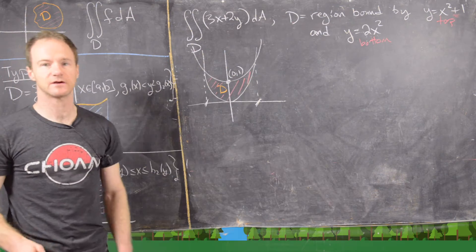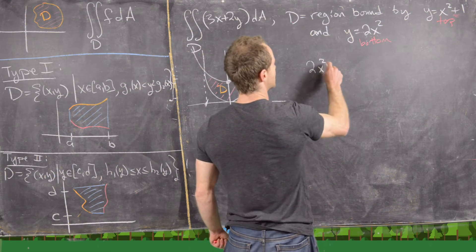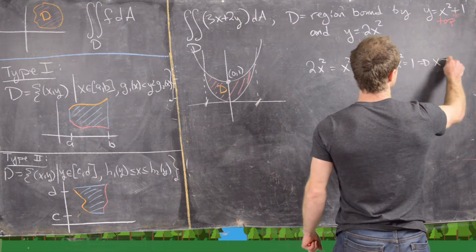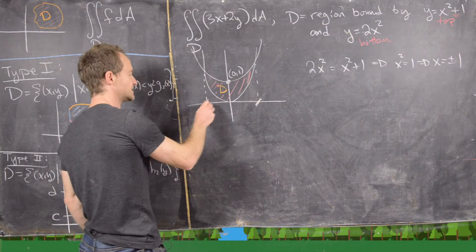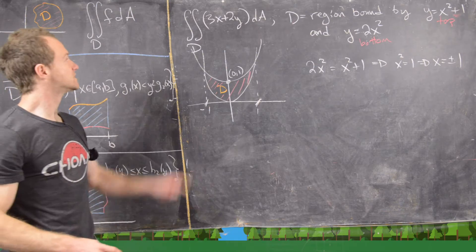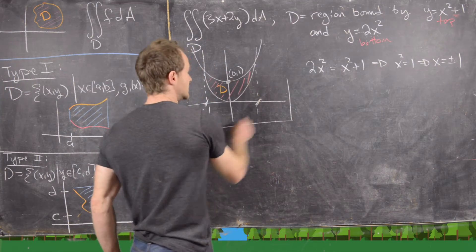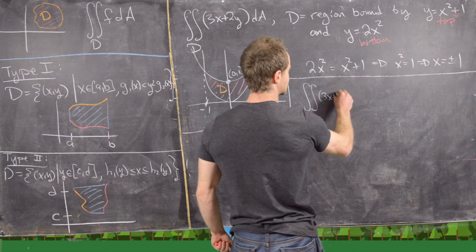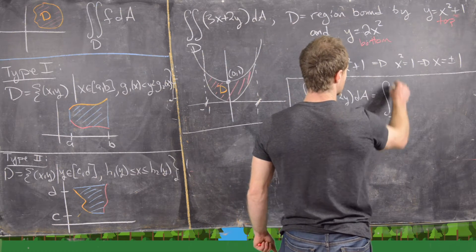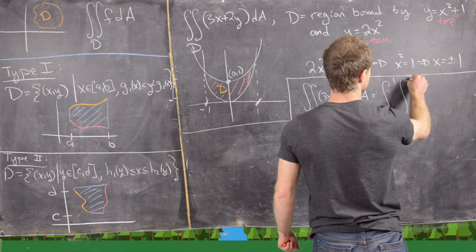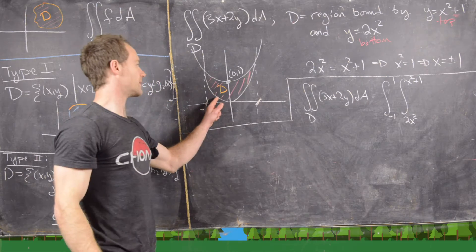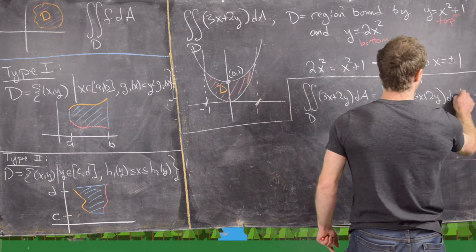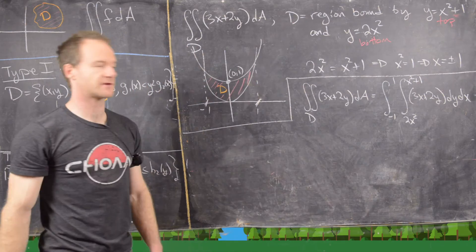We find the intersection points by setting the curves equal: 2x² = x² + 1, giving x² = 1, so x = ±1. This means our region goes from −1 to +1. This allows us to rewrite the double integral as the integral from −1 to 1, with the inner integral from 2x² to x² + 1, of the function 3x + 2y, dy dx — going from the bottom curve to the top curve.